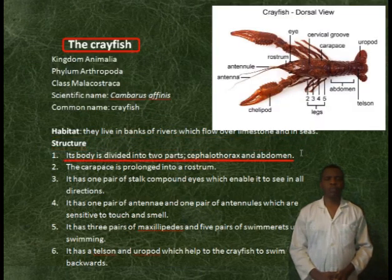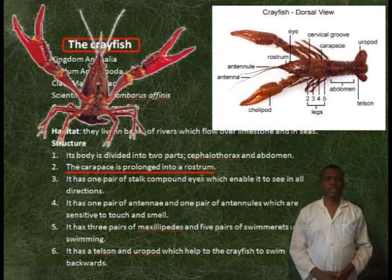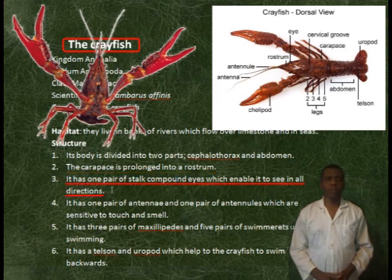Structure. Its body is divided into two parts: the cephalothorax and abdomen. The carapace is prolonged into a rostrum. It has one pair of stalked compound eyes, which enable it to see in all directions.